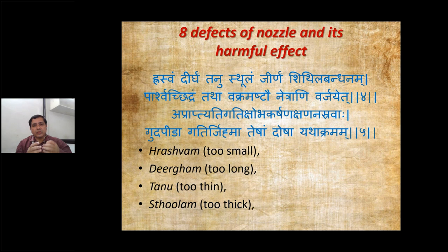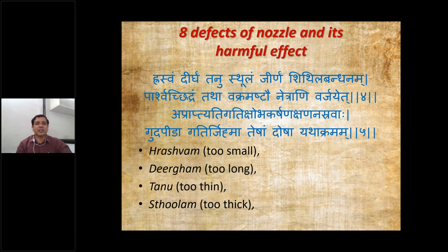These are the doshas or defects, and accordingly by sequence they create the following complications: Aprapti, Atigati, Kshobha, Karsana, Kshanana, Sarvaha, Buddhapeda, Gatirjimha — these are the Dosha Akramam. First of all, Rasvam, that is too-small Basti Netra. Next, Dirgham, that is too long. Tanu, that is too thin. Sthulam, that is too thick.